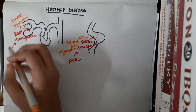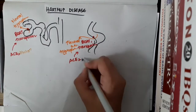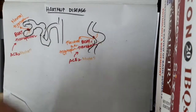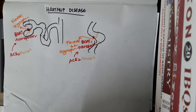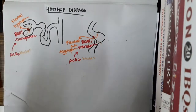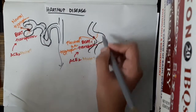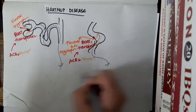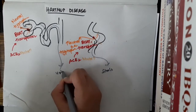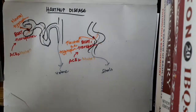If there is any mutation in this gene, then these neutral amino acids are not absorbed. The tryptophan is then lost in the urine and in the stools.